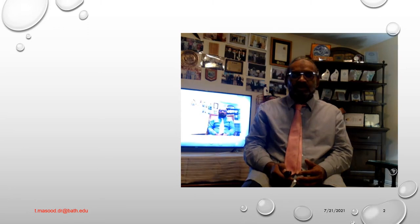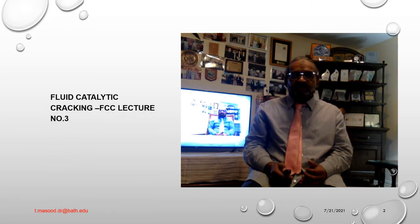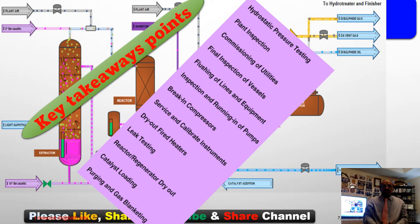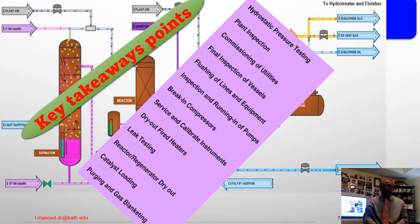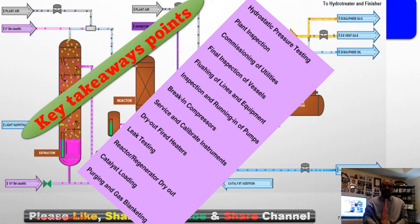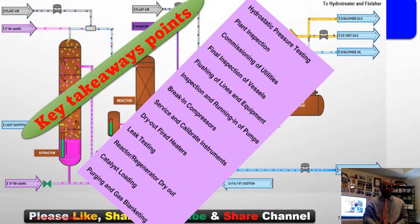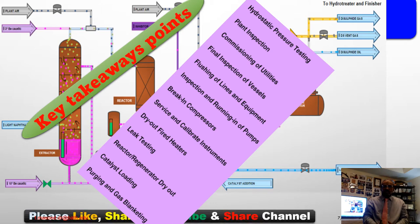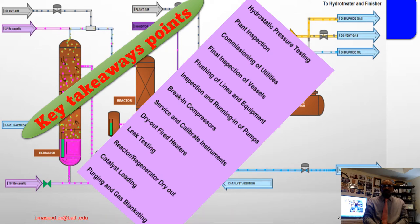Fluid catalytic cracking — Lecture Number Three: Absorbing Unit Initial Start-Up Procedure. Key takeaway points from Lecture Number Three: topics already discussed include hydrostatic operation testing, plant inspection, commissioning of utilities, final inspection of vessels, flushing of lines and equipment, inspection and running-in of pumps, breaking compressors, service and calibration of instruments, and dry-out of fire heaters.